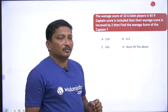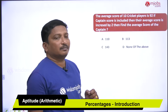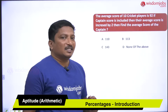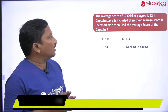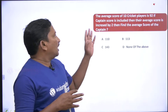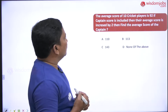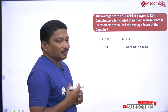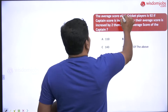Here is the question: the average score of 10 cricket players is 92. If the captain's score is included with them, their average score increases by 2. Find the average score of the captain. Initially, 10 players are given with an average score of 92.